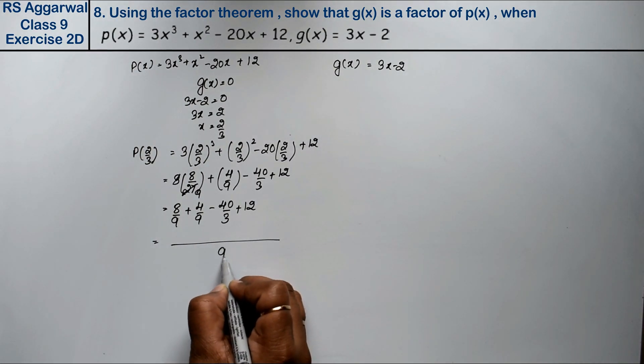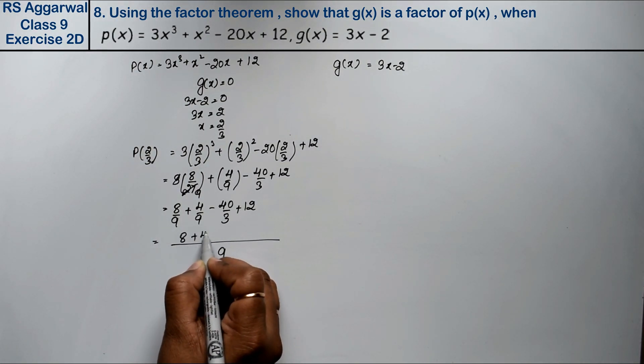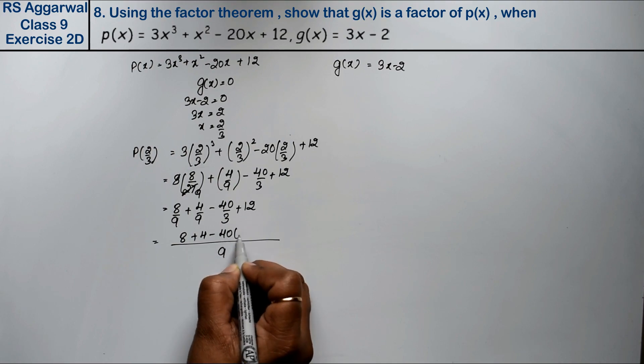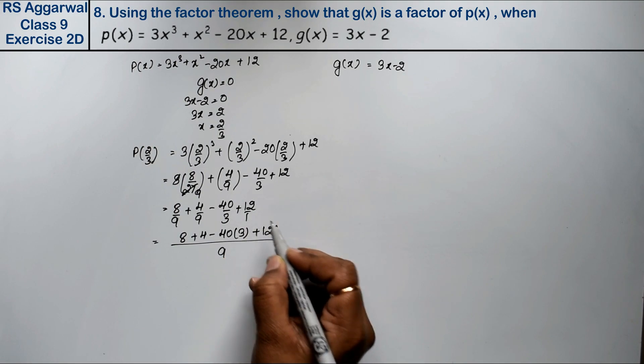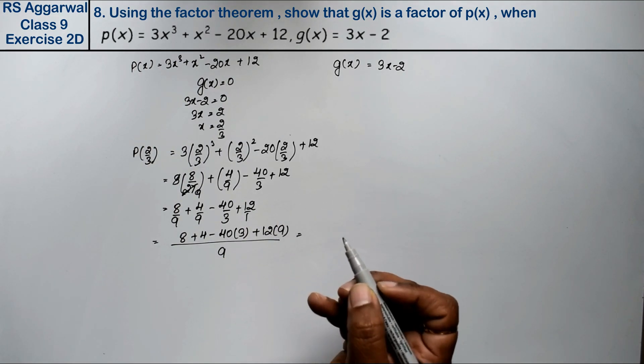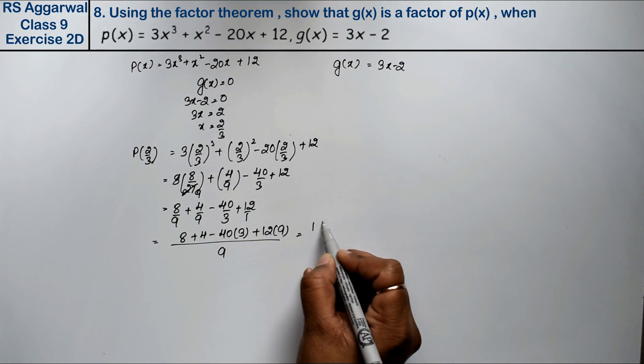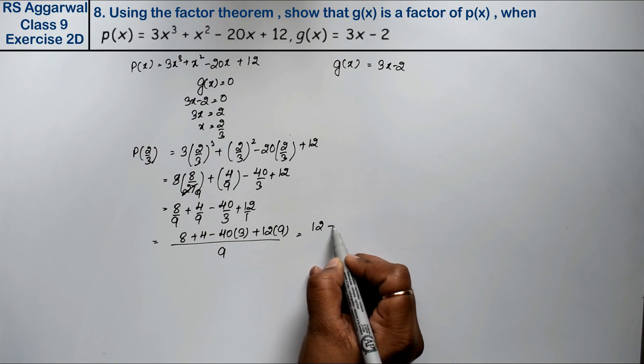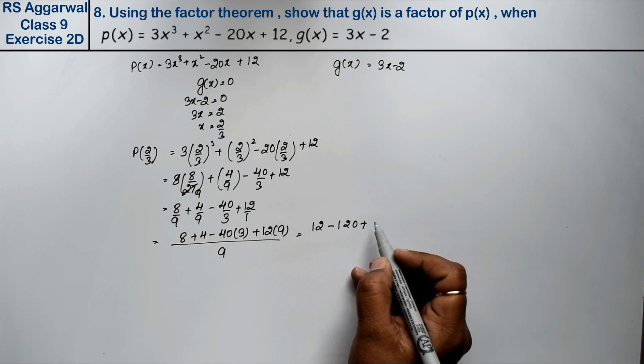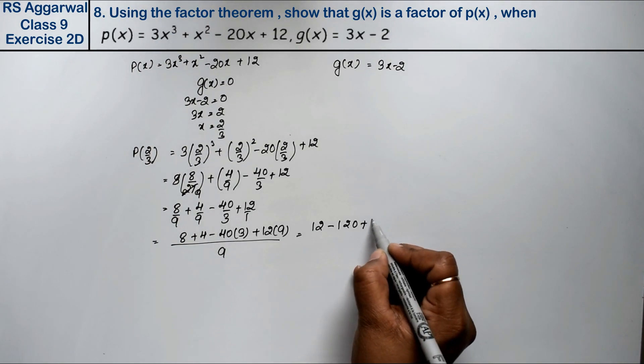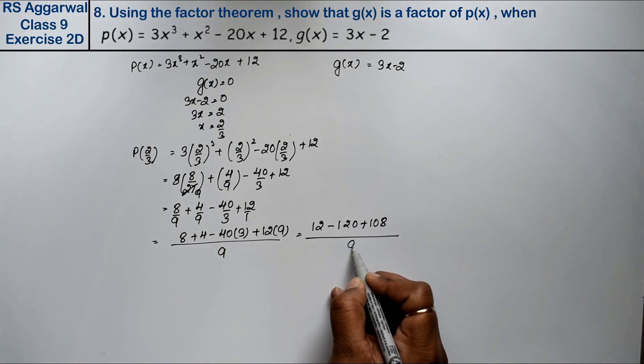The LCD is 9. So we have 8 + 4 - 40 times 3, which equals 12 - 120 + 108 over 9.